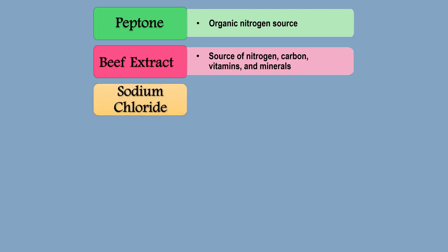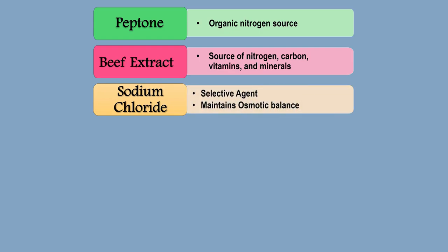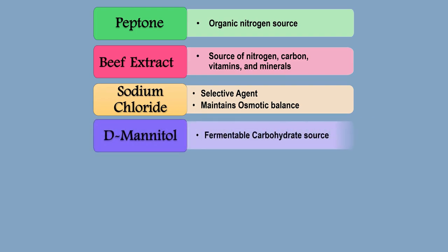The third ingredient is Sodium Chloride. In MSA, Sodium Chloride acts as a selective agent. It also maintains the osmotic balance. The fourth ingredient is D-mannitol. It is the fermentable carbohydrate source.